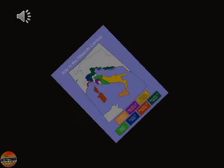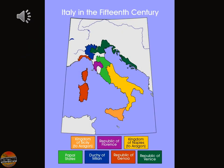As we talked about in class on Tuesday, Italy is no longer united like it was during ancient Roman times. As the Middle Ages occurred, Italy split up into many different kingdoms. You have the Kingdom of Sicily in the south, the Republic of Florence in the north, the Kingdom of Naples in the southeast, the Papal States in central Italy around Rome, the Duchy of Milan, the Republic of Genoa, and the Republic of Venice.